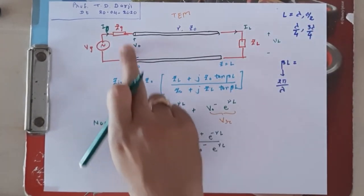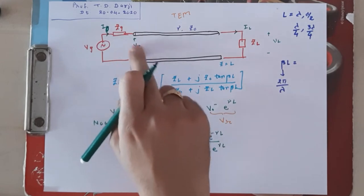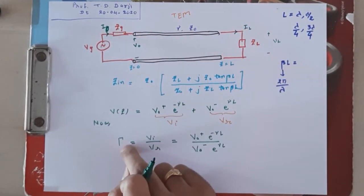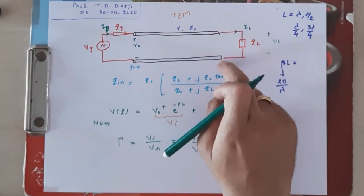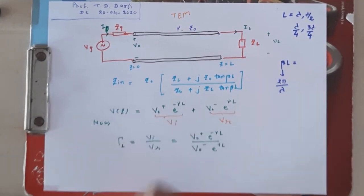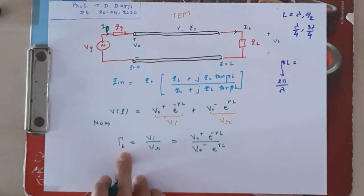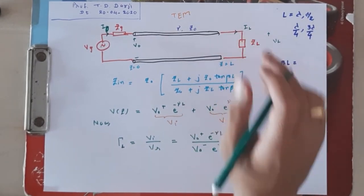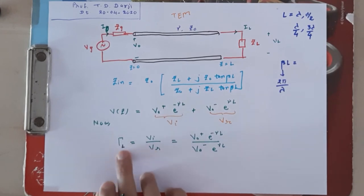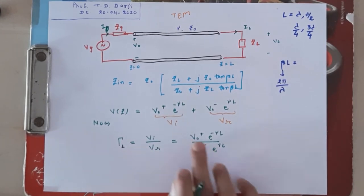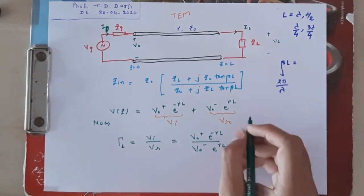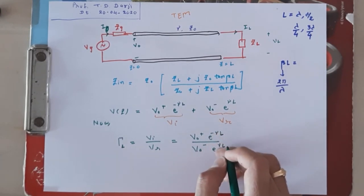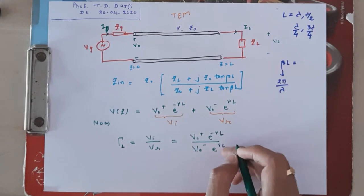Z=0 is the source or generator side and Z=L is the load side. First we find the reflection coefficient at the load side, τ_L. τ_L is the reflection coefficient at the load side, equal to V_0⁻·e^(+γL) divided by V_0⁺·e^(−γL).